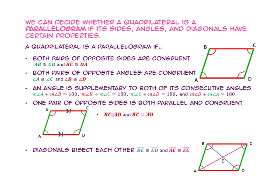We can decide if a quadrilateral is a parallelogram if its sides, angles, and diagonals have certain properties. We can use those to prove quadrilaterals are parallelograms, plus one more. A quadrilateral is a parallelogram if both pairs of opposite sides are congruent, or if both pairs of opposite angles are congruent, or an angle is supplementary to both of its consecutive angles, or one pair of opposite sides is both parallel and congruent, or if the diagonals bisect each other. If any one of these five things is true, a quadrilateral is a parallelogram.